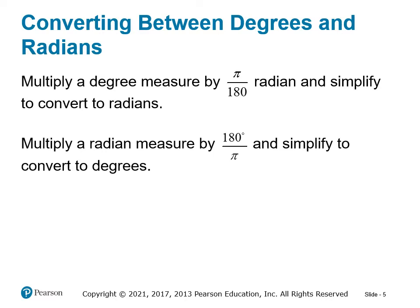When we're converting between degrees and radians, we multiply a degree measure by pi over 180 radians and simplify — this converts to radians. We do exactly the opposite for the inverse. If we have a radian measure that we want to convert to degrees, we multiply the radians by 180 over pi, and then simplify to convert to degrees.